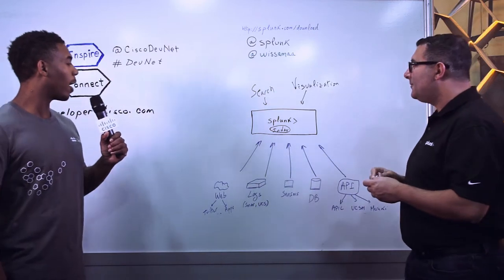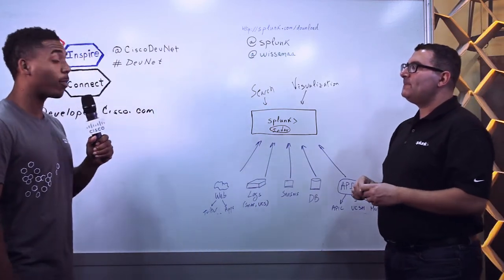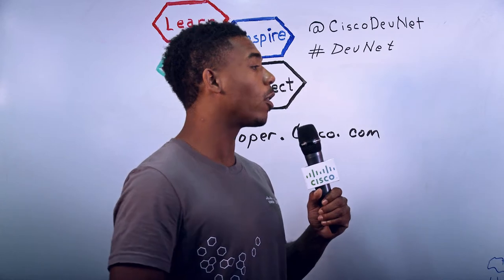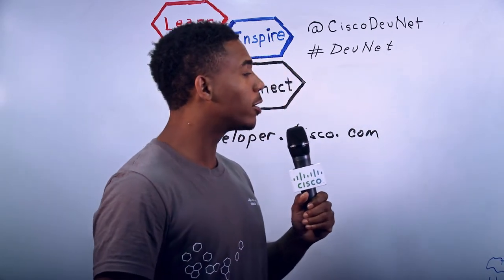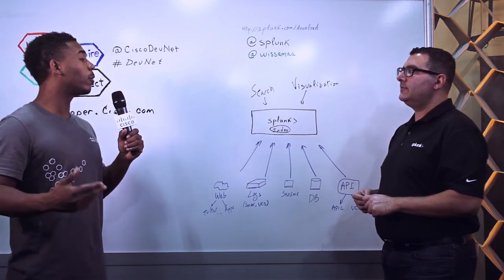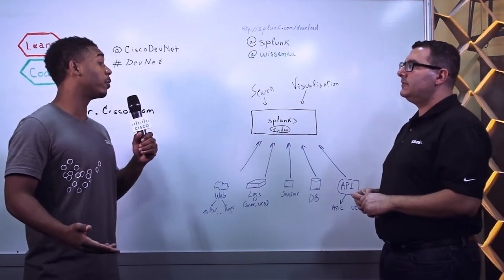Great. Thanks, Wissam. It sounds like Splunk is really powerful in the analytics domain. So could you tell us a little bit more about which APIs you use? I mean, here at Cisco DevNet, we're all about APIs, SDKs. So can you tell us a little bit about what Cisco APIs you use and how they've really helped you guys enable Splunk and enable those analytics?